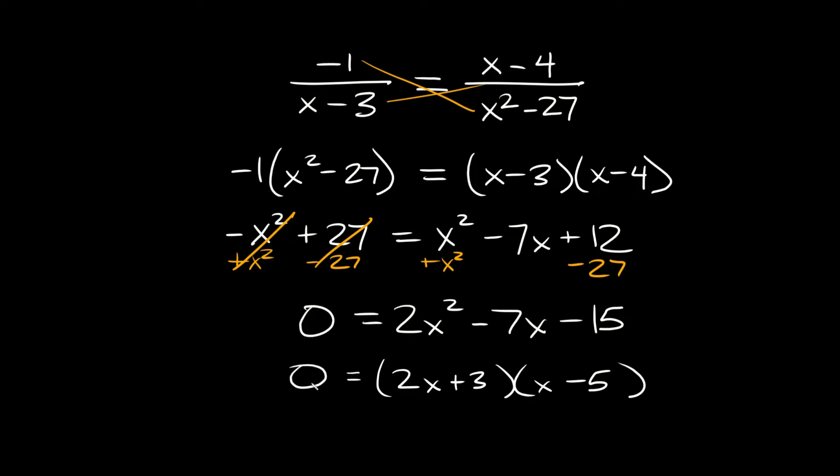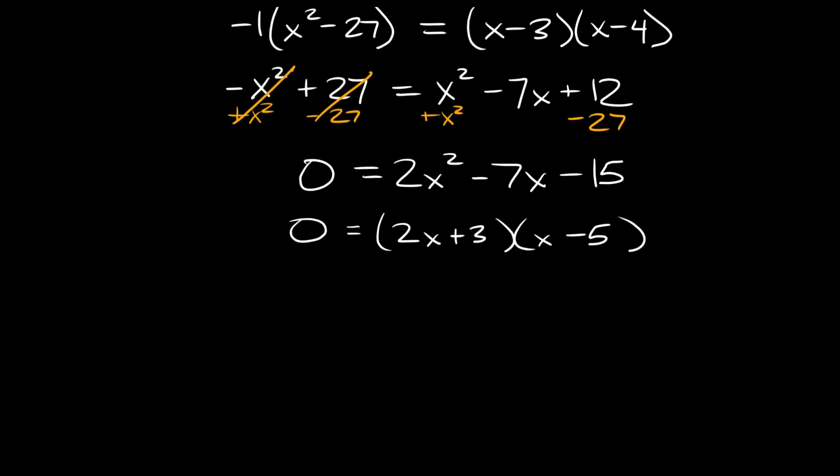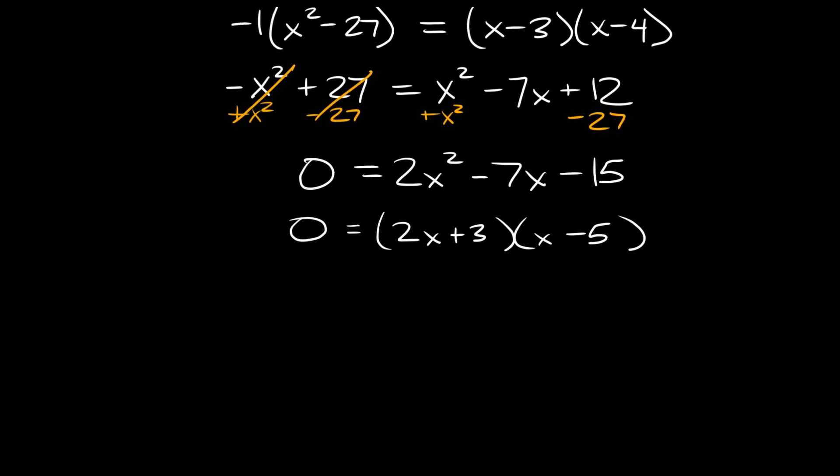This is equal to zero. So we're almost there. Since we have our two factors here we just have to set those equal to zero. So first we have 2x plus 3 equals zero and x minus 5 equals zero.